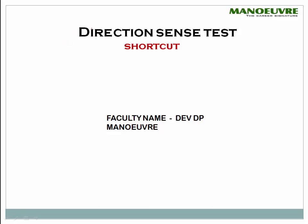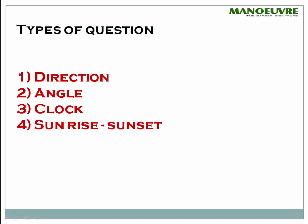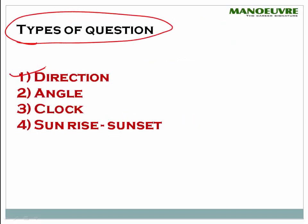Hi guys, welcome to Manoeuvre. In this video we will be discussing shortcuts on the Direction Sense test. In CET, you can expect a bare minimum of 2 to 3 questions from this area. We will be covering all types of questions from this topic. The types of questions that come in CET are: first, direction-based questions; second, angle-based questions; third, clock; and fourth, sunrise and sunset. In this session we will be learning about direction-based questions which involve distance as well.